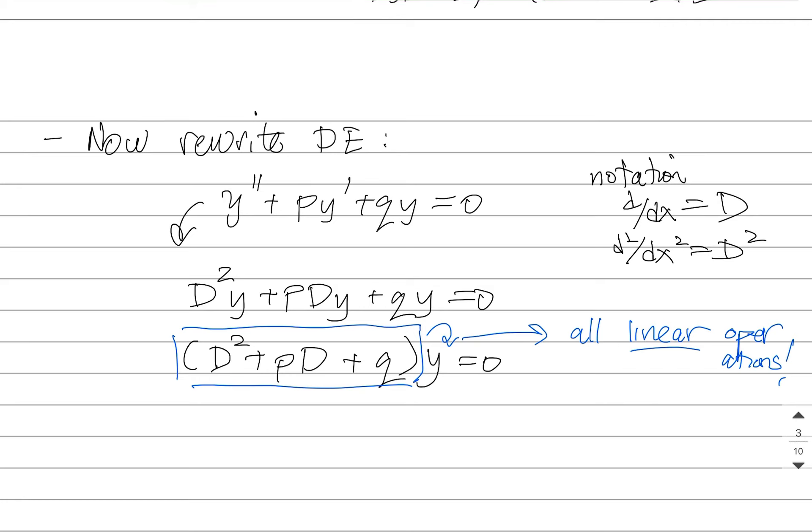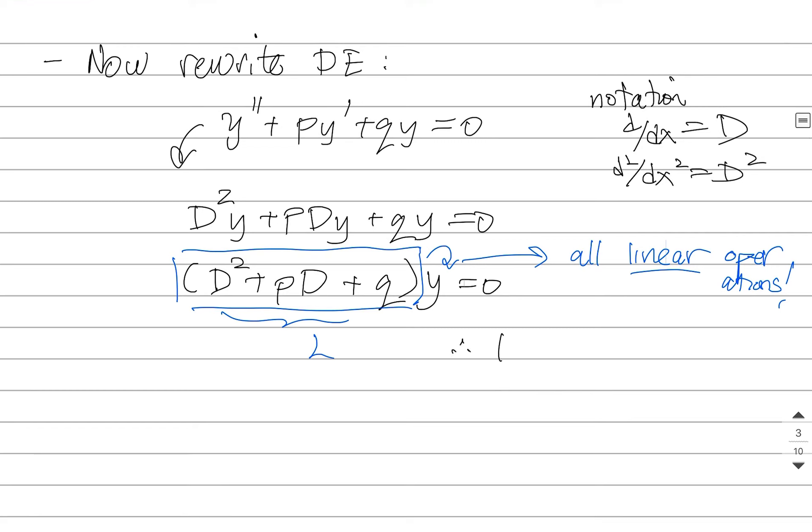And because they're all linear operations, I'm just going to call this thing L, and I'm going to call this L for linear. And that means that our differential equation becomes L(y) equals zero. So it's a very succinct, compact way of writing it, but it's more than just compactness.